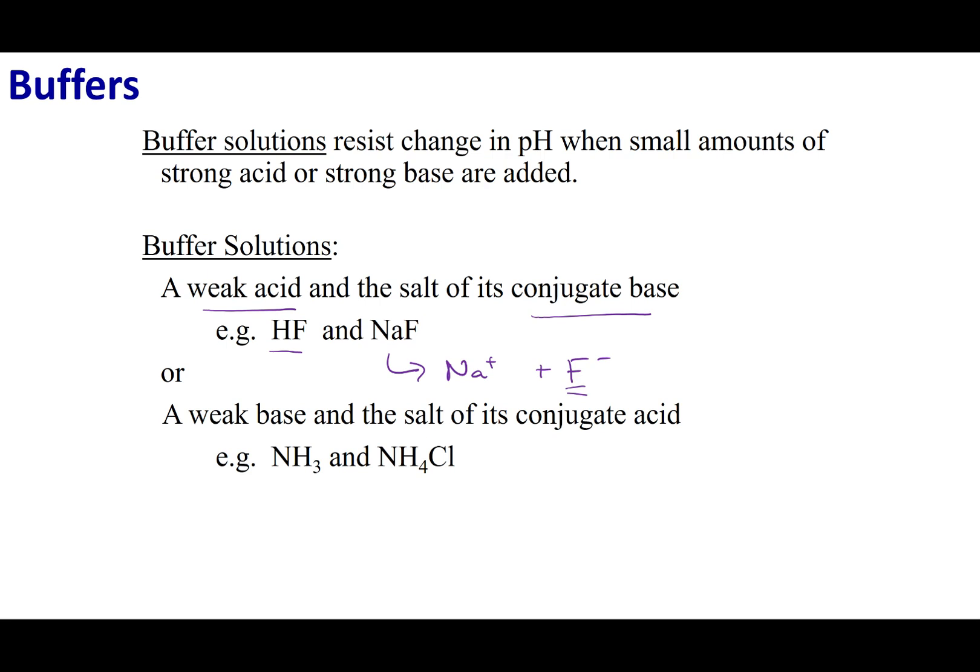Another way you can make a buffer is if you use a weak base and the conjugate acid. So in this case, NH3 is a weak base, and then NH4Cl breaks up into NH4+ plus Cl-, and so this is the conjugate acid of NH3. What you'll note is to make a buffer, you need something weak, and its conjugate.